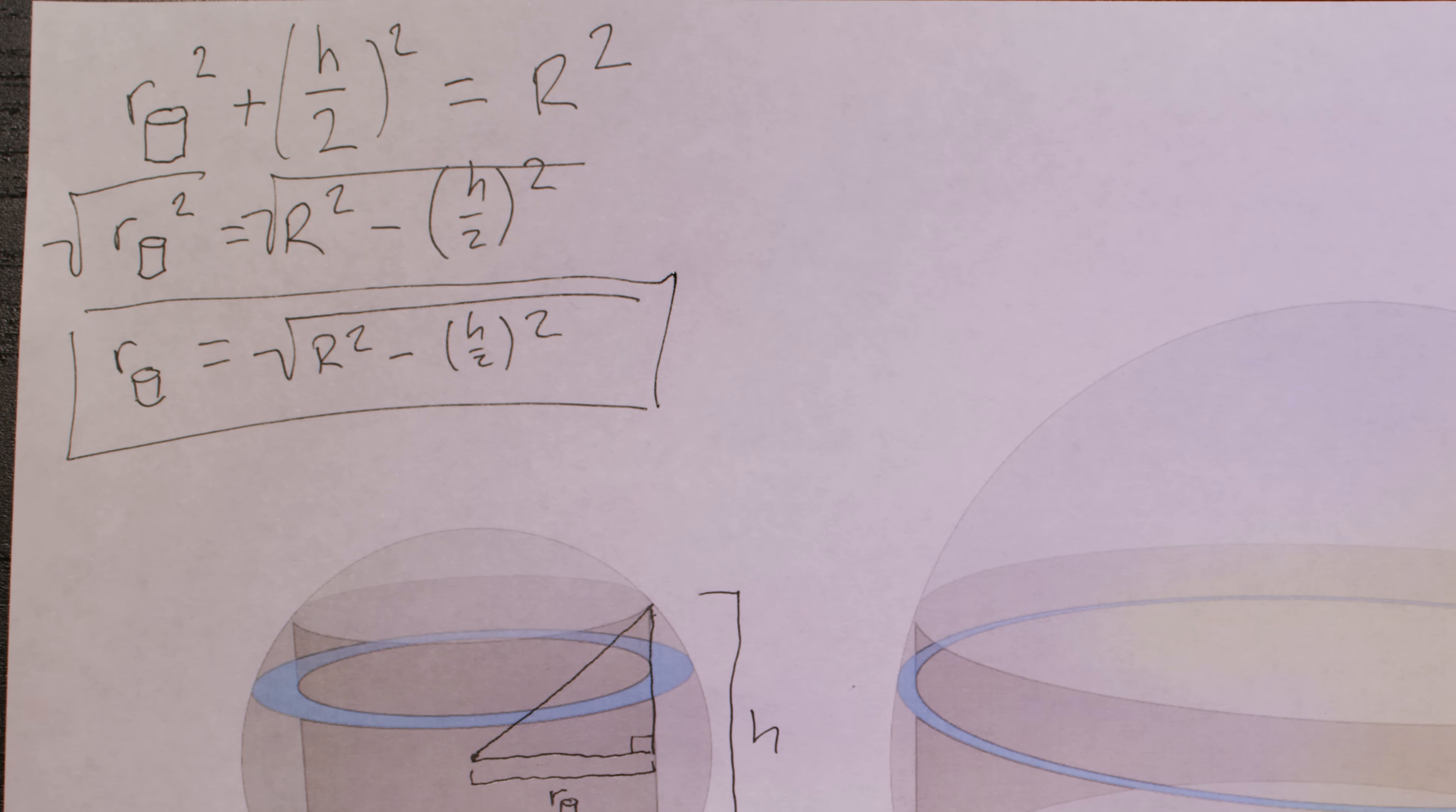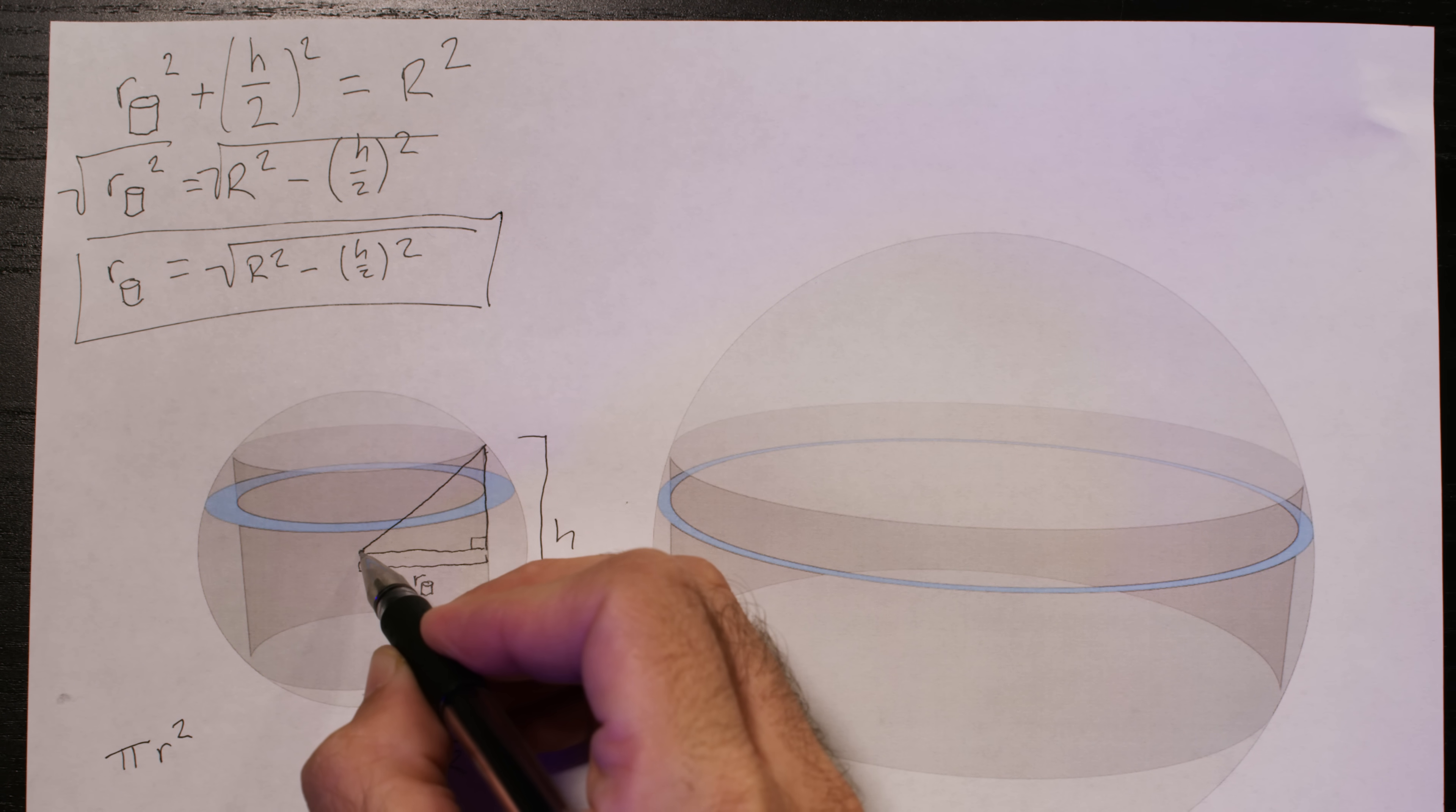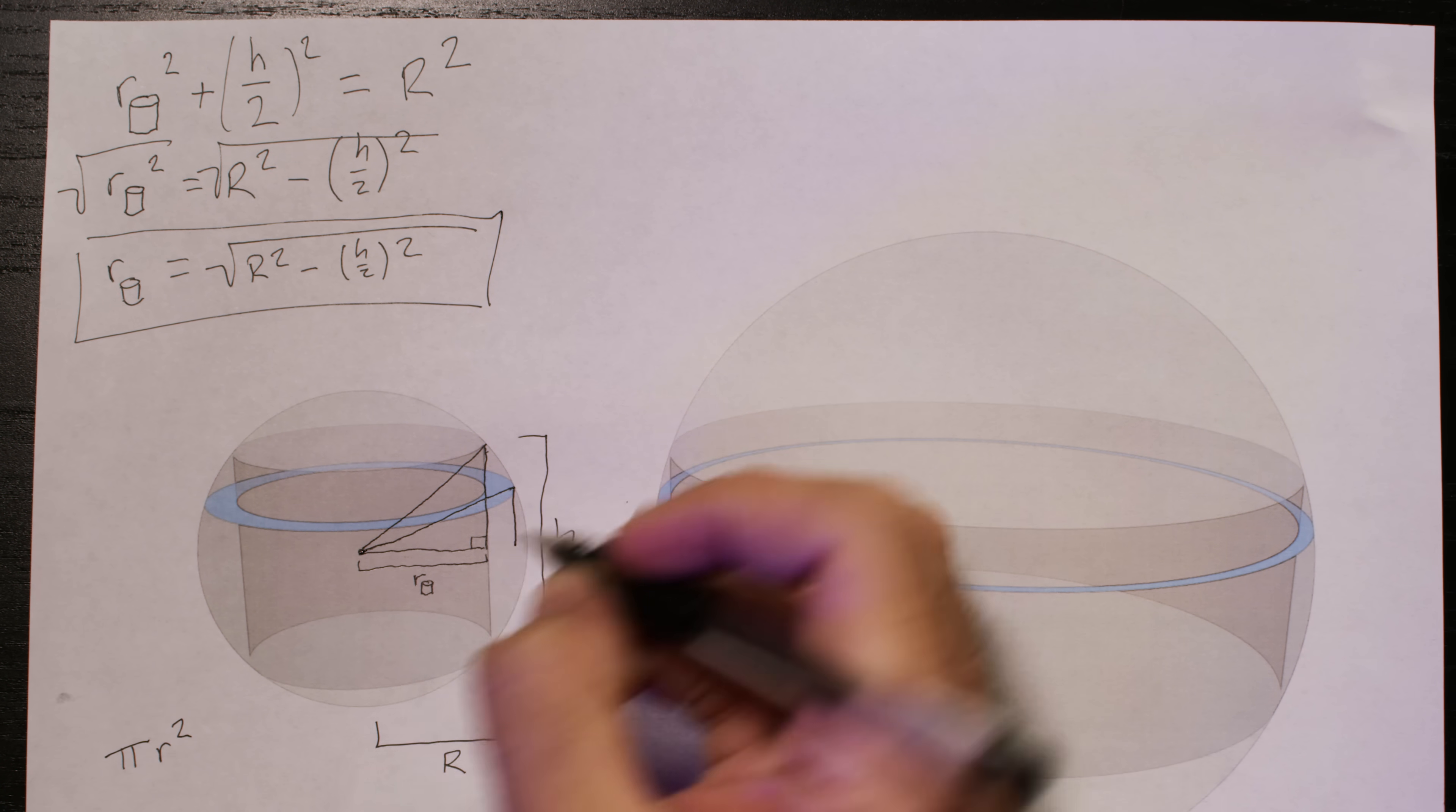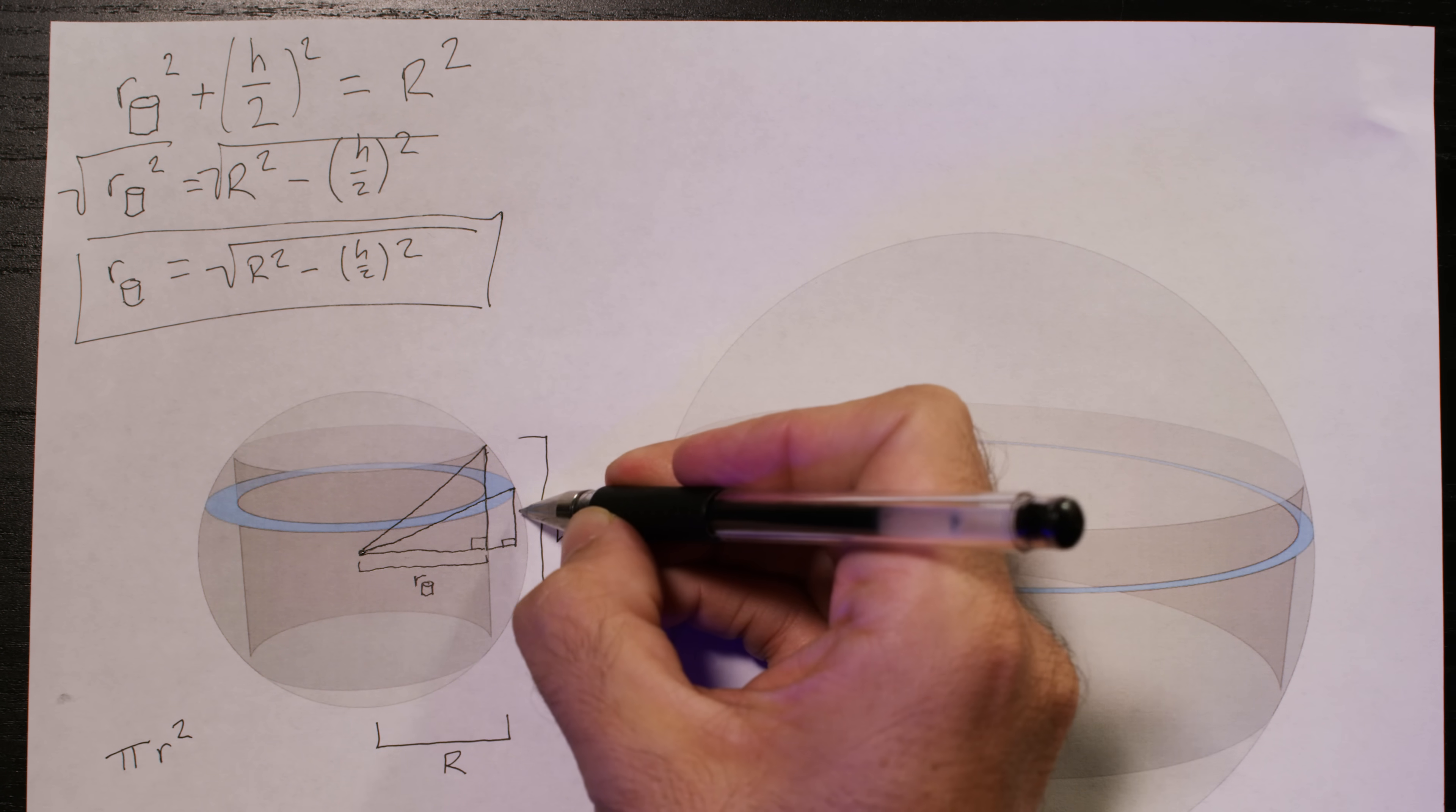Okay, now let's take a look at the area of a cross section of the sphere. Now for this, let's draw a straight line from the center out to the edge of the sphere's cross section. And then we'll go straight down and connect back up, hey look, another right triangle.